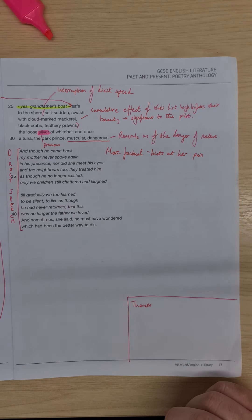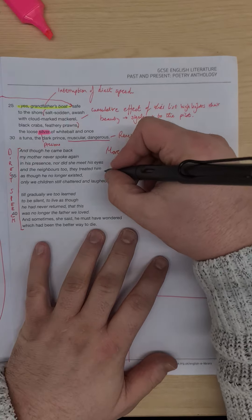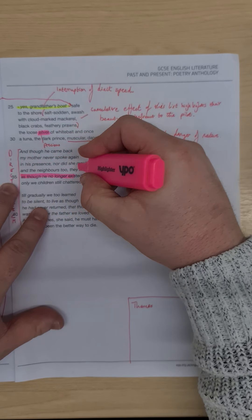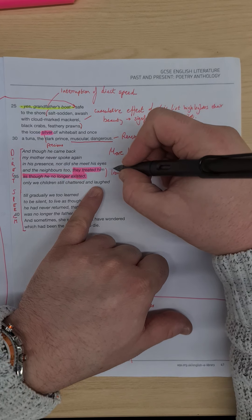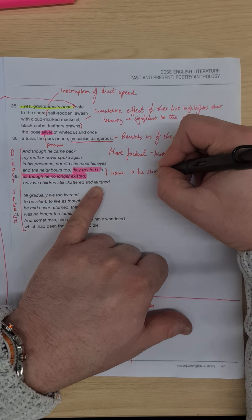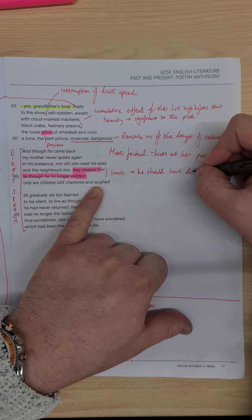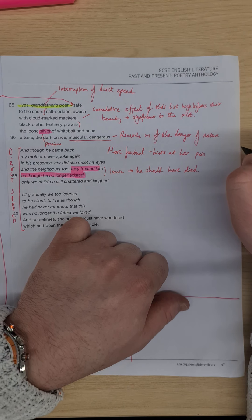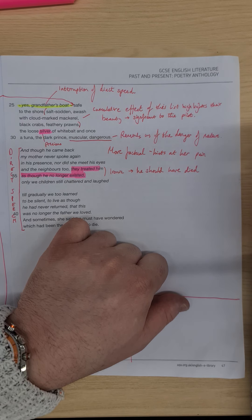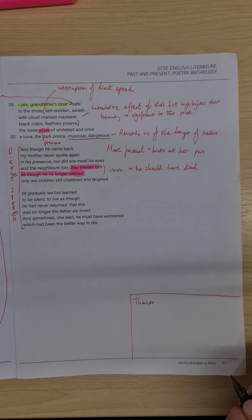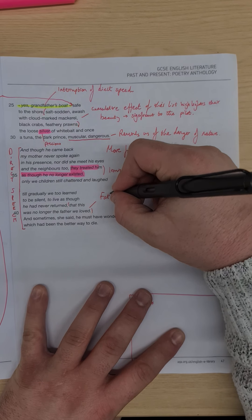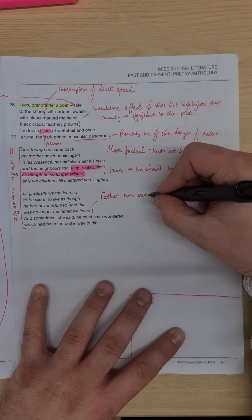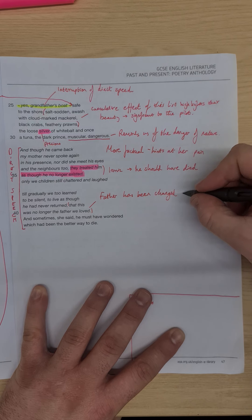Looking here with 'they treated him as though he no longer existed,' it's ironic. So here we have the irony. I'm hoping you're picking up on the ironic side of this: he should have died, but he did survive, but he's being treated as if he died. Till gradually we too learned to be silent, to live as though he had never returned, that this was no longer the father we loved. So here we see 'this was no longer the father,' the father has been changed, and I'd say that was by the experience.